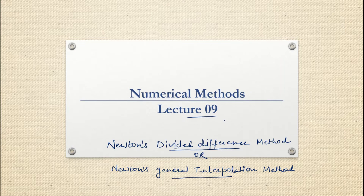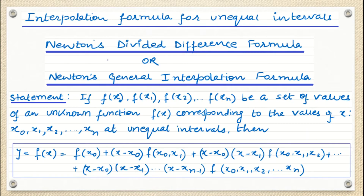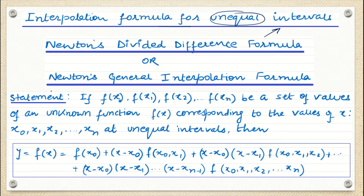In the first lecture we discussed the differences between all these three methods. Today's class covers data points which are unequally located. We already discussed the theory, so we are going to jump directly into the question. This slide shows the formula — the interpolation formula for unequal intervals. For equal intervals we have Newton's forward and backward formula, and today we see Newton's divided difference formula.